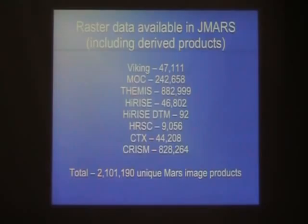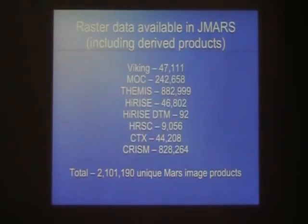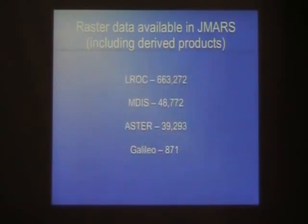We do this by having a system on the back end that holds just the portion of the image you actually need for the scene you're looking at — we scale it down or crop it to the right tiles so you don't have to download gigabytes of data before you can see it. The bottom line is we have over 2 million actual individual images acquired from orbit. We have derived products, local data for Mars, a large number of images for the Moon via LROC, Mercury data, Earth data, and we're working on asteroids. We also have Galileo images for some of the moons of Jupiter and Saturn.